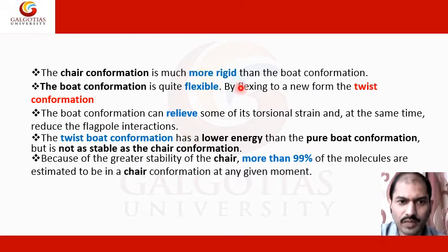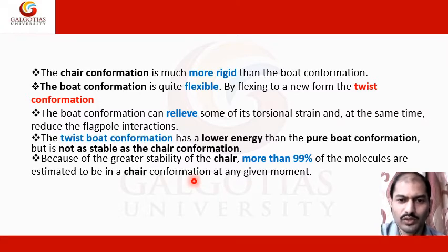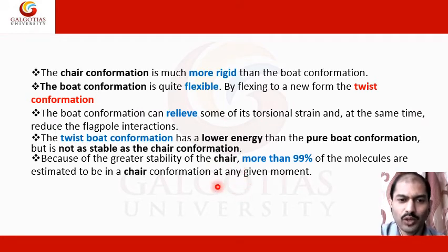The chair conformation is much more rigid than the boat conformation. The boat conformation is quite flexible — by flexing to a new form called the twist conformation, the boat can relieve some of its torsional strain and reduce the flagpole interaction. The twist boat conformation has lower energy than the pure boat conformation, but is not as stable as the chair conformation. More than 99 percent of cyclohexane molecules are estimated to be in the chair conformation.